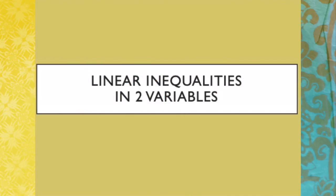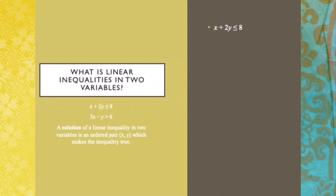Linear Inequalities in Two Variables. Expressions such as x plus 2y less than or equal to 8, or 3x minus y greater than 6, are what we call linear inequalities in two variables.